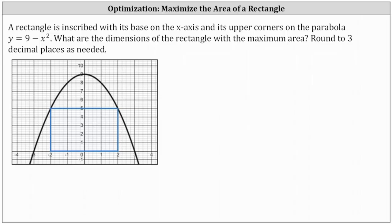A rectangle is inscribed with its base on the x-axis and its upper corners on the parabola y equals 9 minus x squared. What are the dimensions of the rectangle with the maximum area? Round to three decimal places as needed.